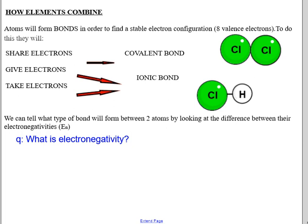Atoms might share electrons. This is called a covalent bond. There may also be a give and take of electrons. This is called an ionic bond.